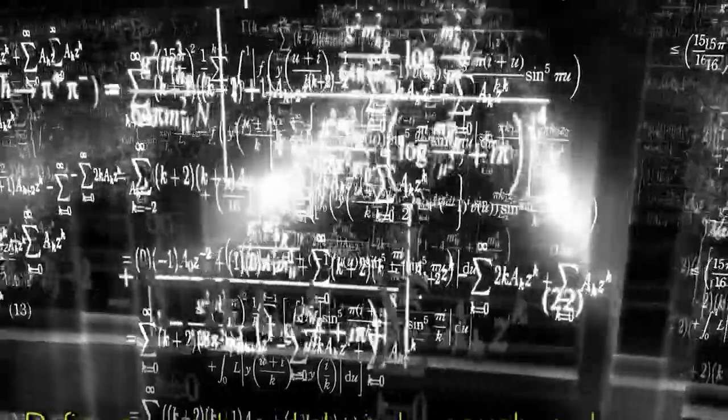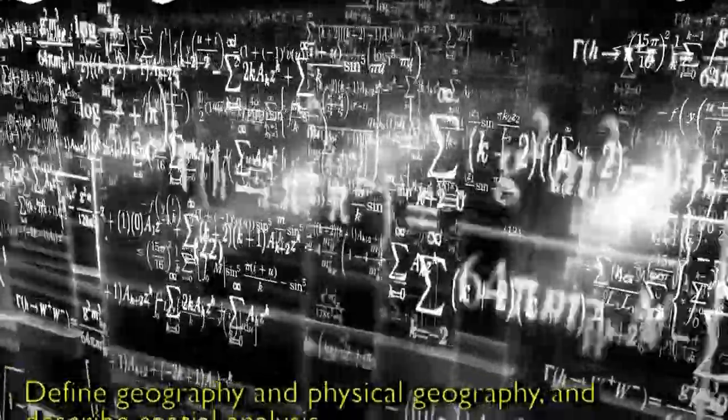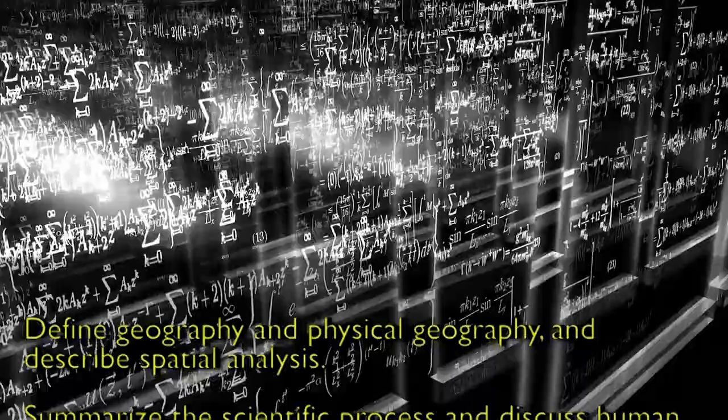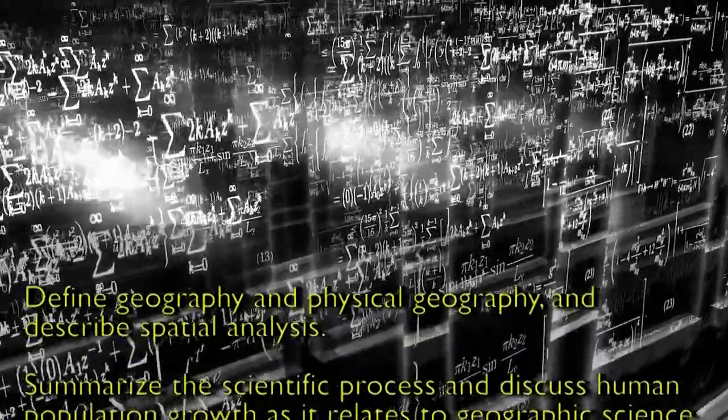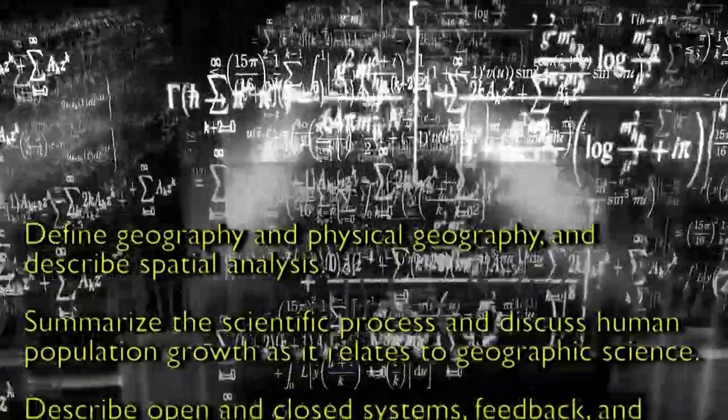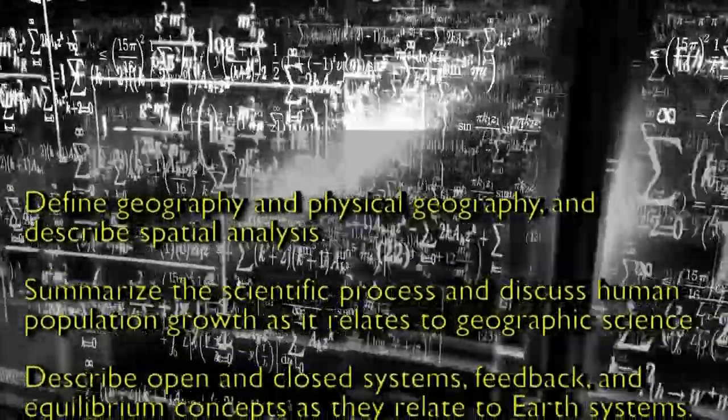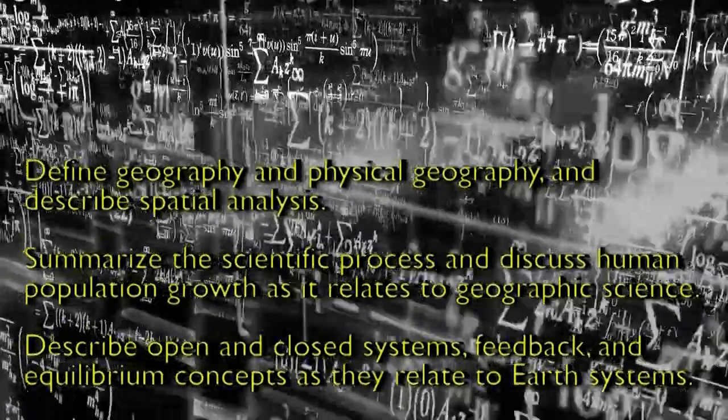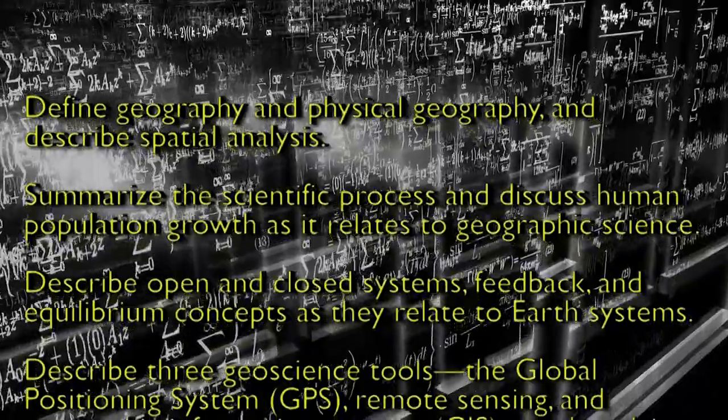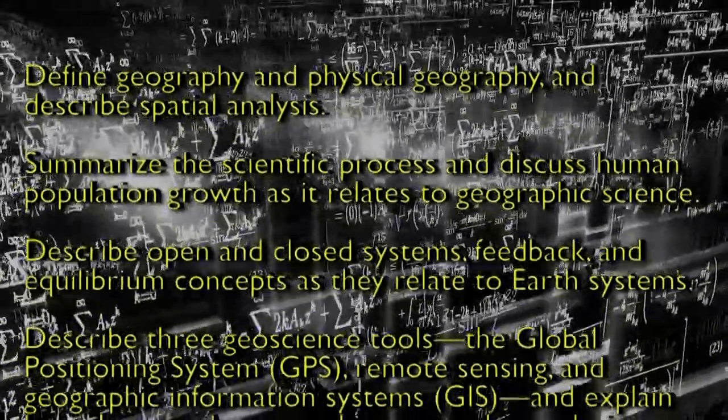Summarize scientific process and discuss human population growth as it is related to geography science. Describe open and closed systems, feedback and equilibrium concepts as they relate to Earth's system, and describe three geographic tools: global position system, GIS, and explain how these tools relate to geographic analysis.